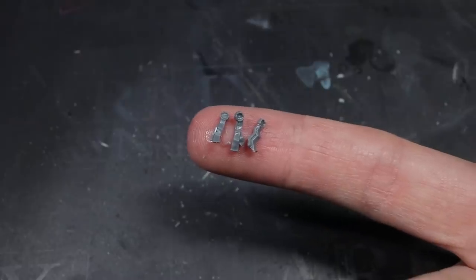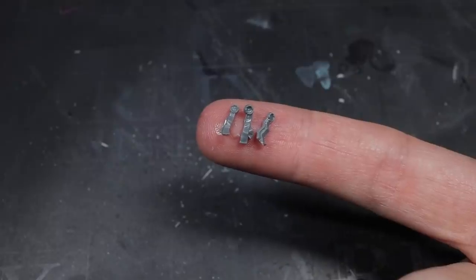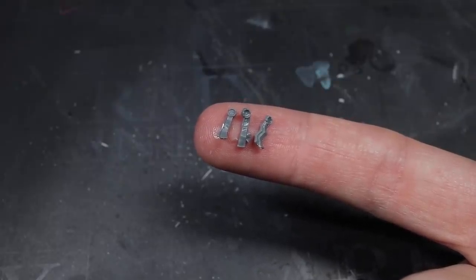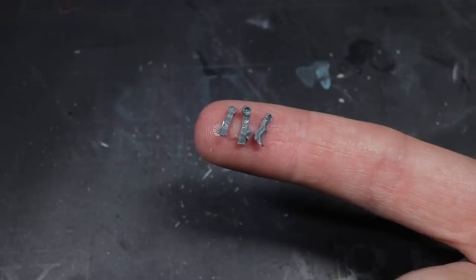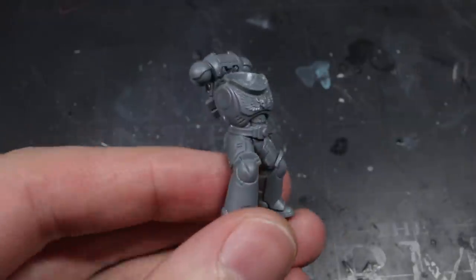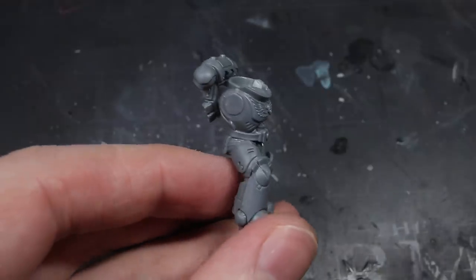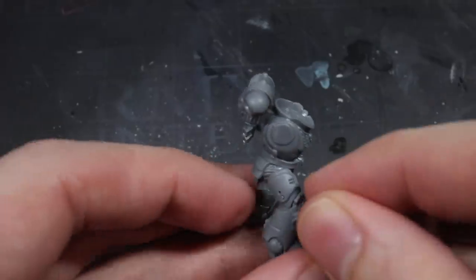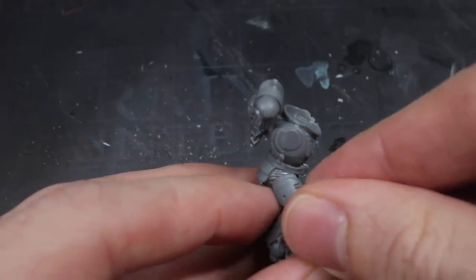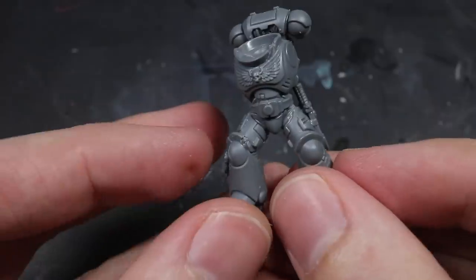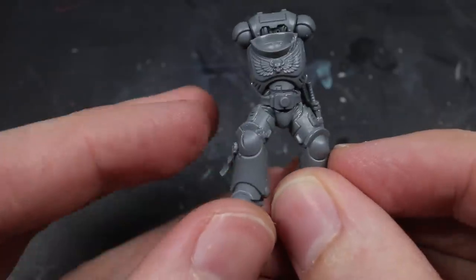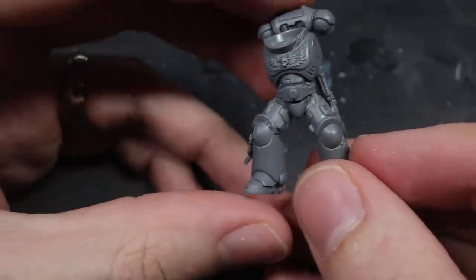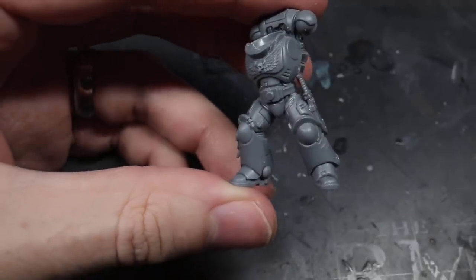The final step in building this model was another fairly simple addition. I opted to add slightly more purity seals to this model than what would normally be found on a typical intercessor. My reasoning behind this lay with the chapters guilt. In addition to this driving them to repent their failings, I felt that they would wish to reaffirm their sanctity and so would be adorned with these extra seals. These components can be found in a whole host of Space Marine kits and can be glued to wherever you see fit on the model.